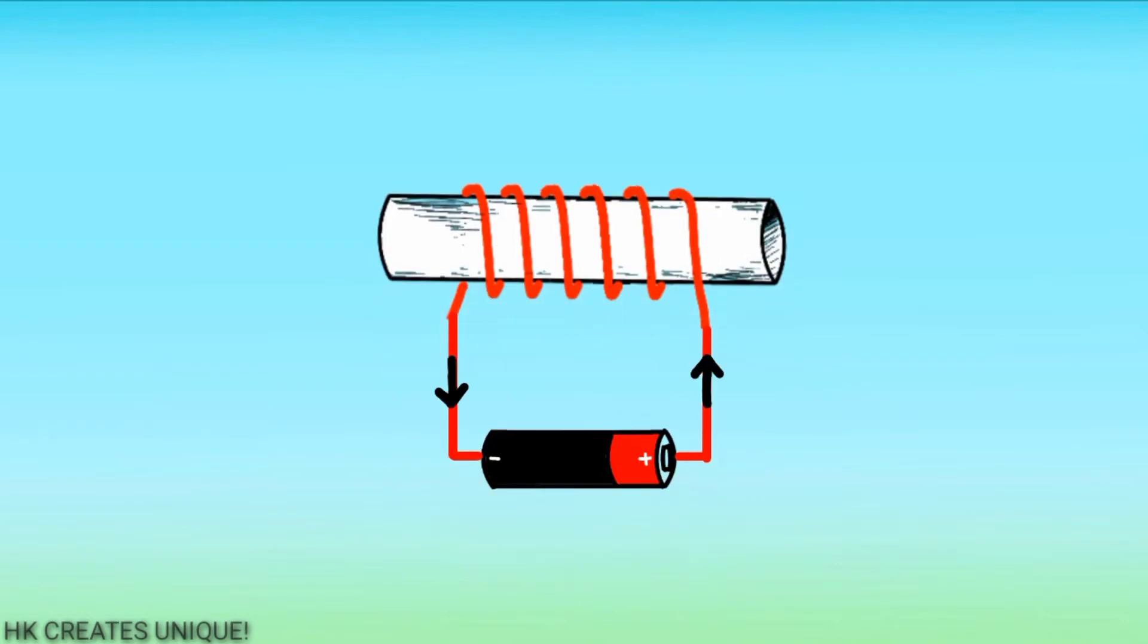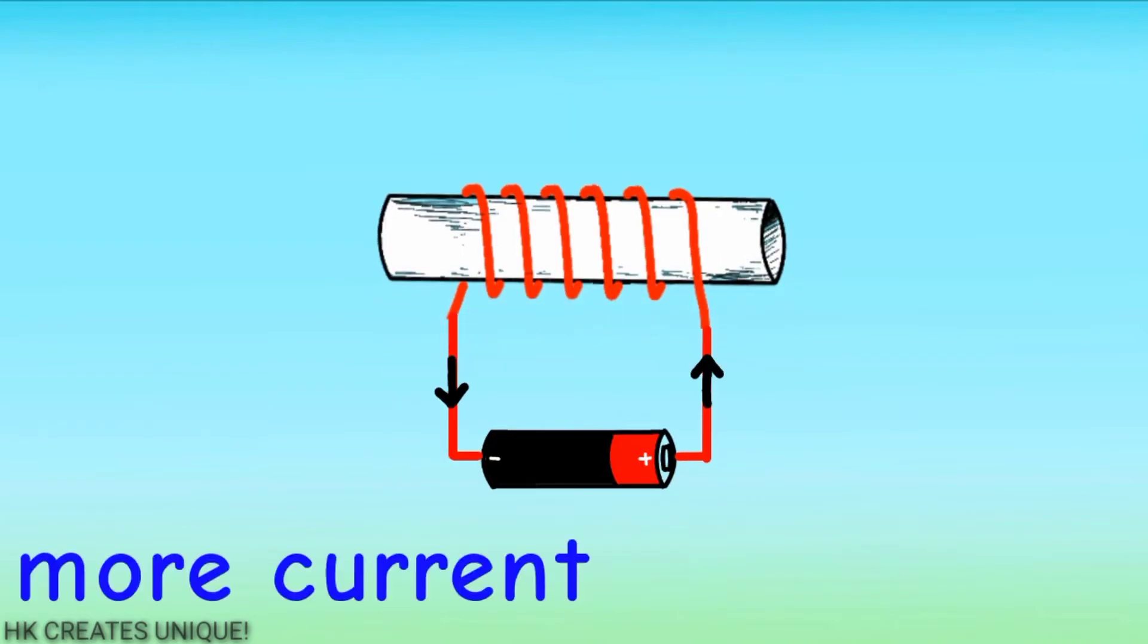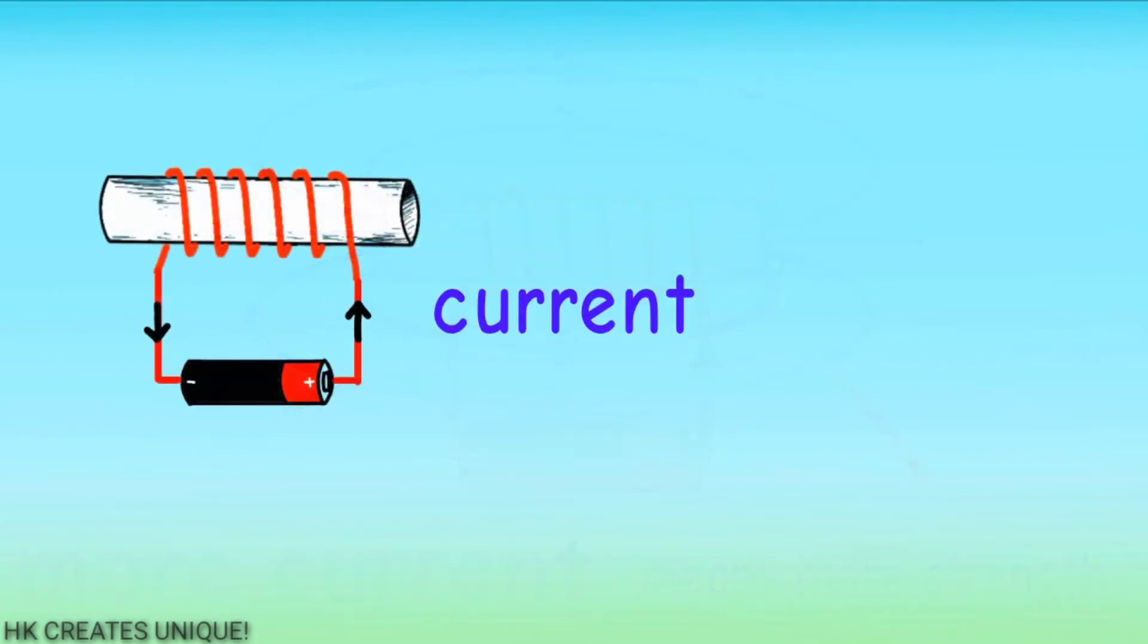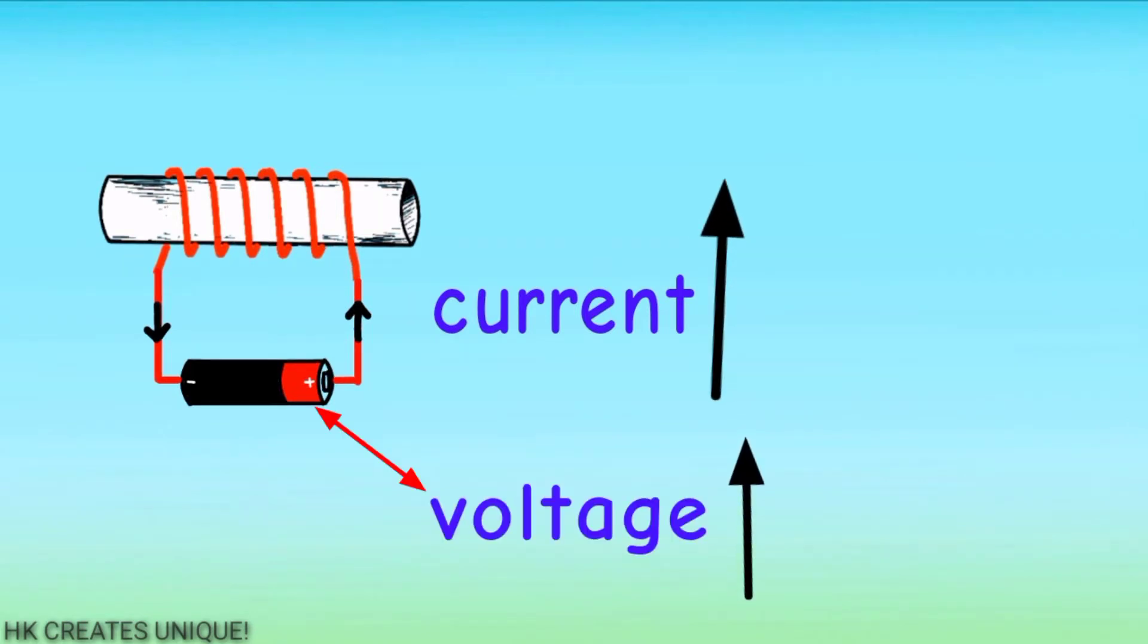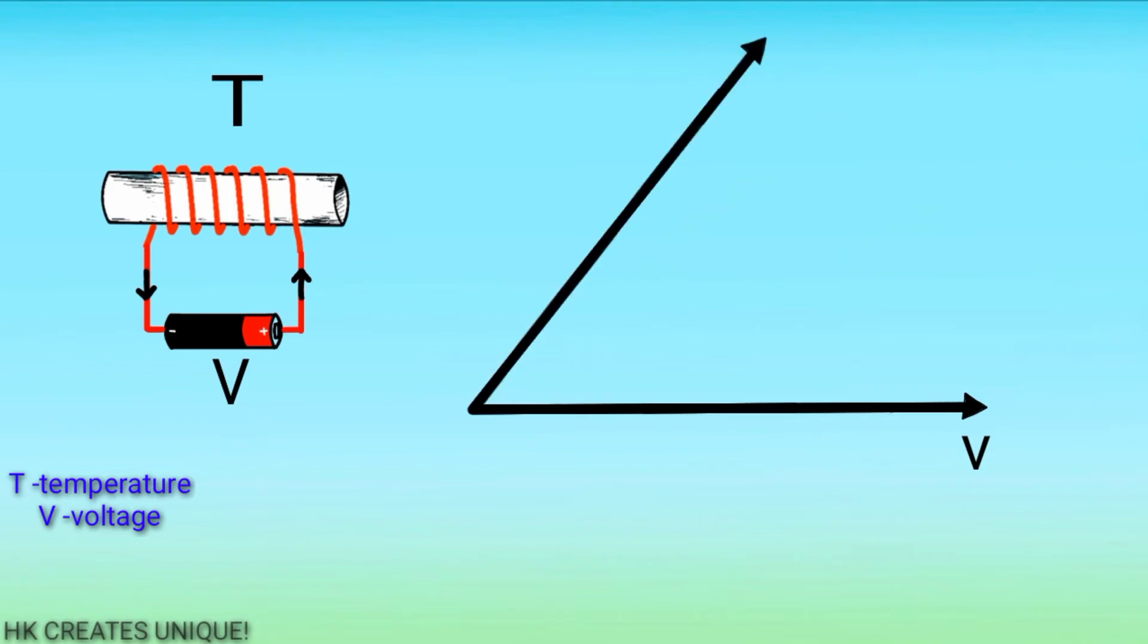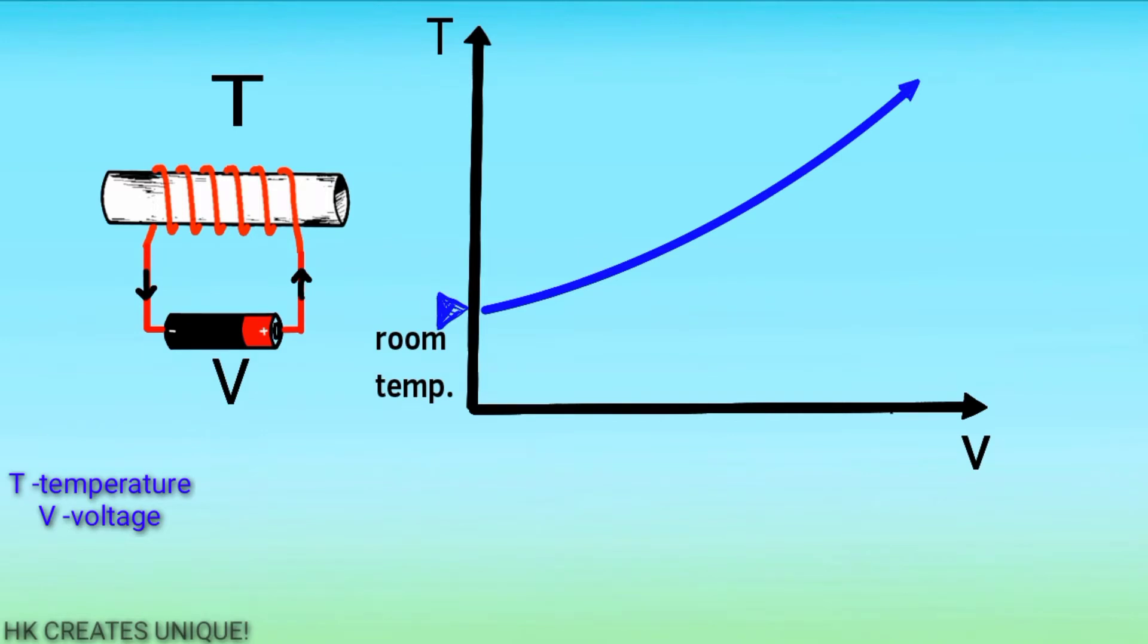Strength of an electromagnet is proportional to the current flowing through it. More current means more strength. Of course, to increase current through the coil, we need to increase voltage across it. But as you increase voltage across the coil, temperature of the coil will also increase like this.